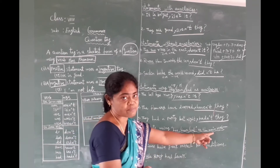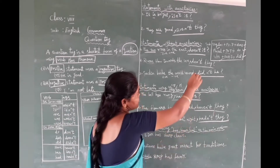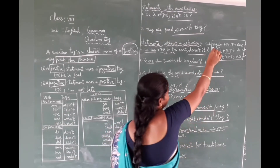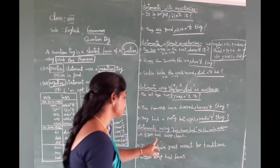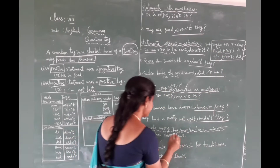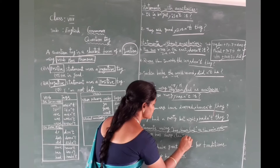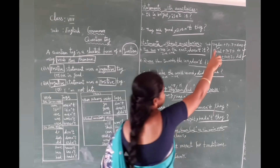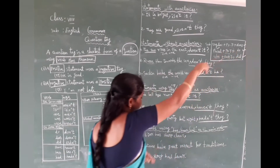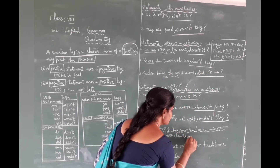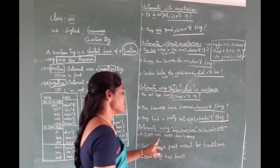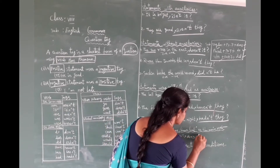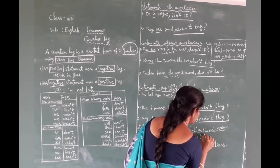When 'has', 'have', or 'had' acts as the main verb, we apply the without-auxiliary rules. Subject singular — use 'does'. For 'A tiger has sharp claws': subject is singular, present tense, so we use 'does'. The given statement is positive, so the tag is negative: 'doesn't it?'